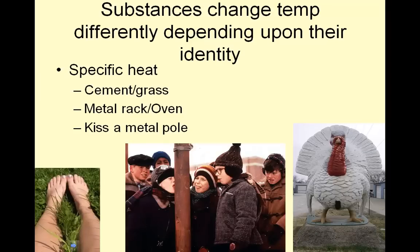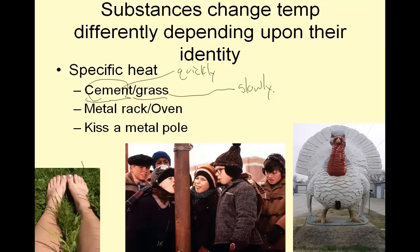Substances change temperature depending upon their identity — that's specific heat. Cement changes temperature quickly; grass changes temperature slowly. If it's summertime and you're barefoot on cement, you burn your feet. On grass, it doesn't burn your feet. They're both out in 100-degree temperature, but the heat transfer is different. Metal oven rack versus oven air — touch the metal rack: burns! Put your hand in the oven air: kind of warm. Kissing a metal pole — metal conducts heat quickly and freezes your lips to it.